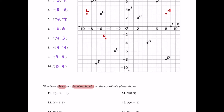For O, that's six comma negative six. The first number is positive six, so we start at the origin and move six units to the right, and then move six units down — that's negative six. This is going to be in quadrant four, and this point is O.